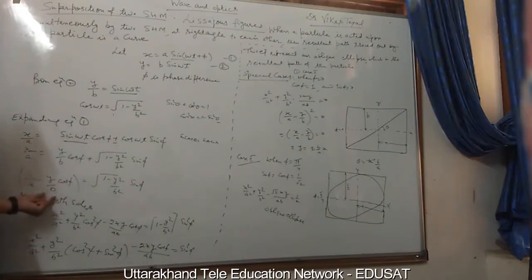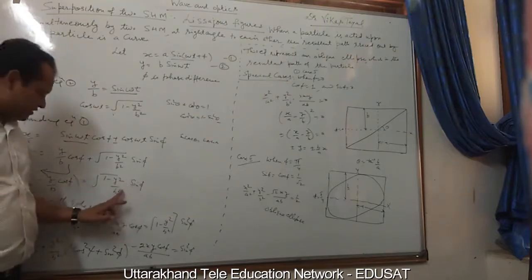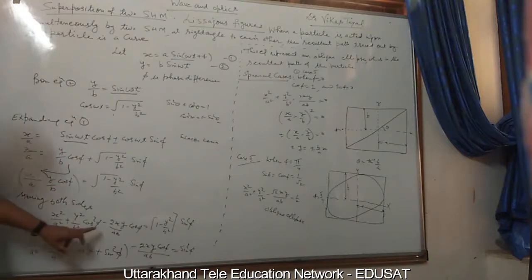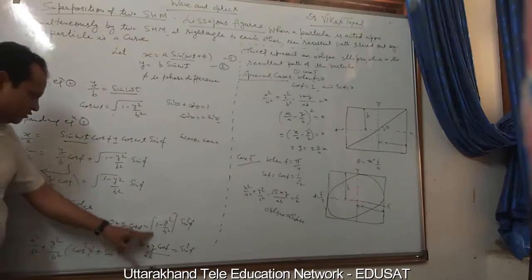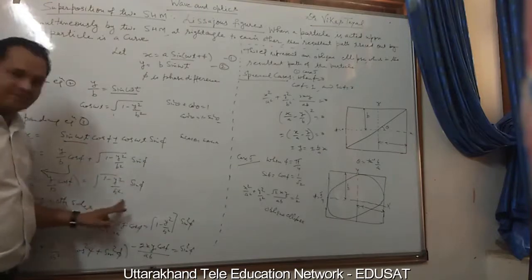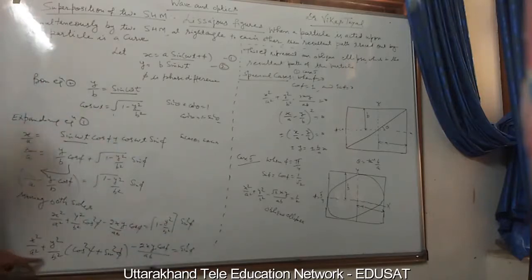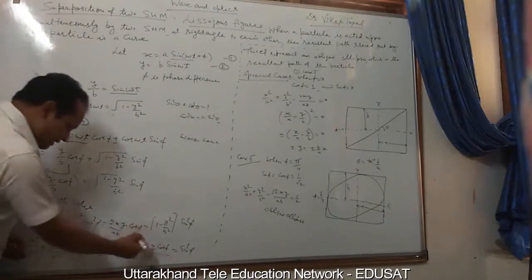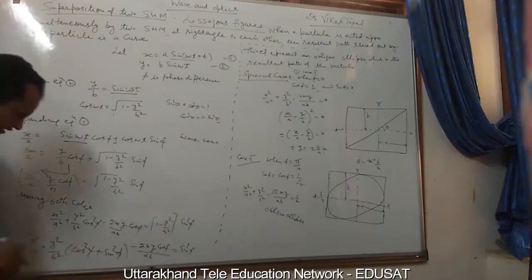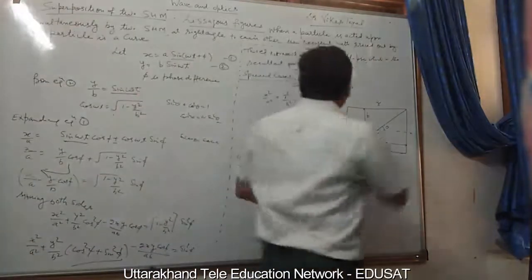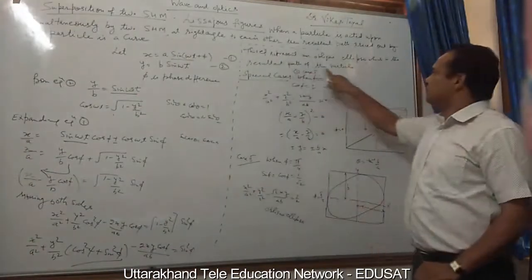Rearranging: x/a − y/b · cos(φ) = √(1 - y²/b²) · sin(φ). Squaring both sides: x²/a² + y²/b² − 2xy/(ab) · cos(φ) = sin²(φ). Since cos²(φ) + sin²(φ) = 1, the final result is x²/a² + y²/b² − 2xy·cos(φ)/(ab) = sin²(φ), which represents an oblique ellipse — the resultant path of the particle.